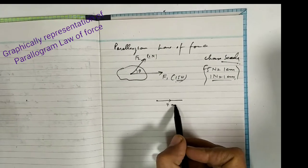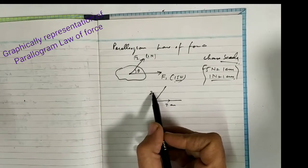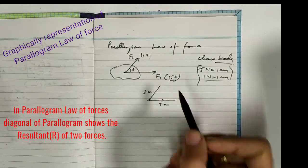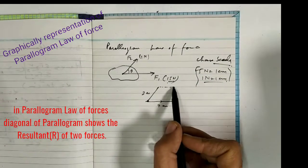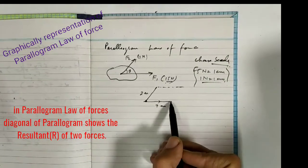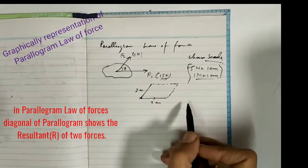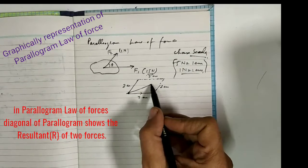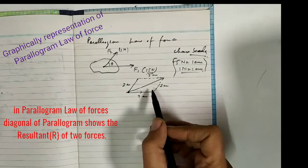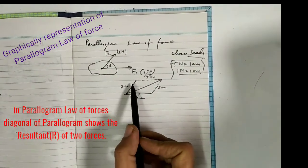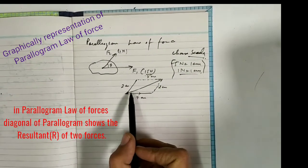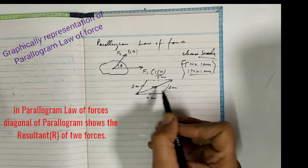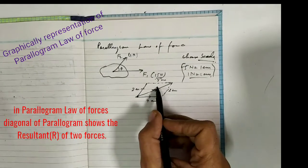F1 is represented as 3 centimeters and F2 as 2 centimeters. We represent these two forces by the two adjacent sides of a parallelogram, then complete it — one line parallel to F2 and another parallel to F1. The completed parallelogram has sides of 2 cm and 3 cm respectively. The diagonal of this parallelogram represents the resultant of these two forces in magnitude and direction.